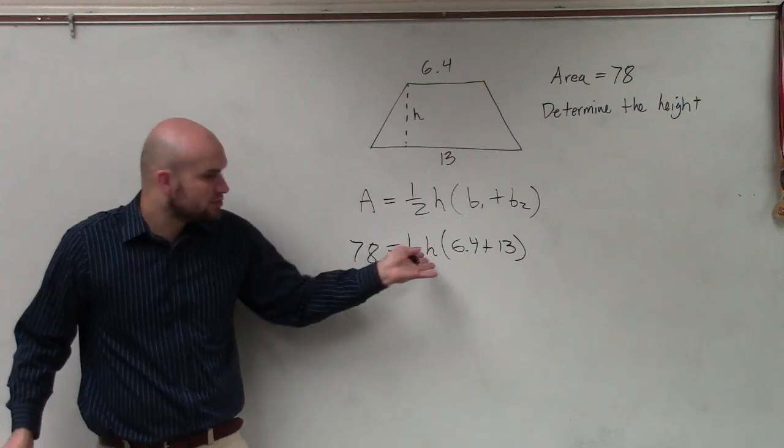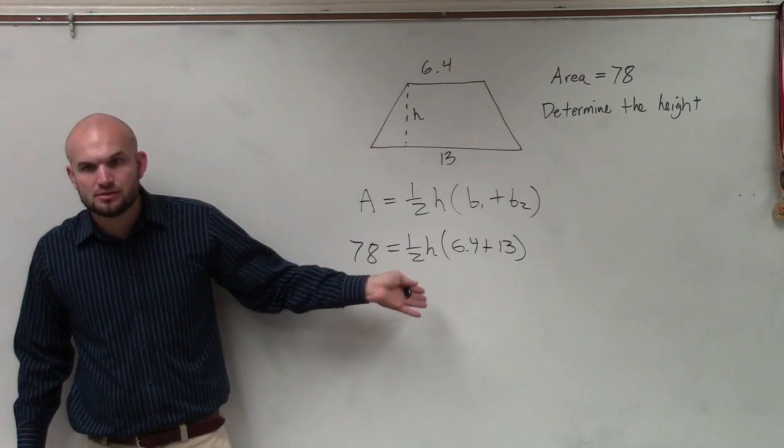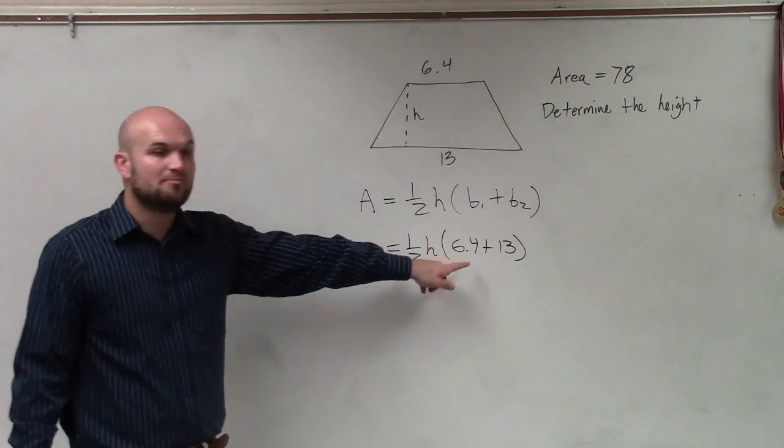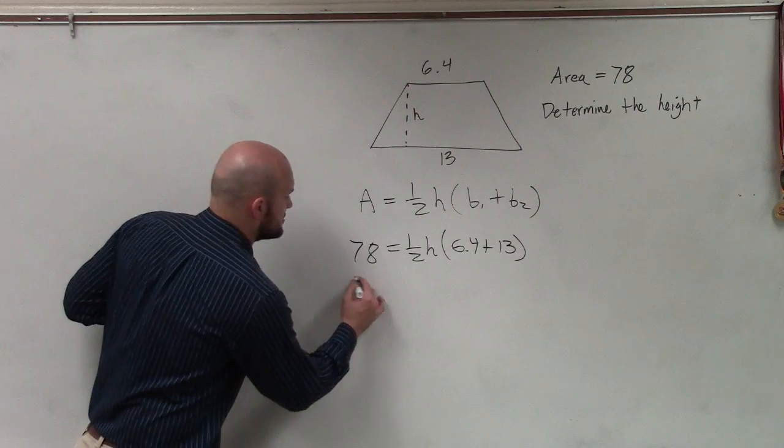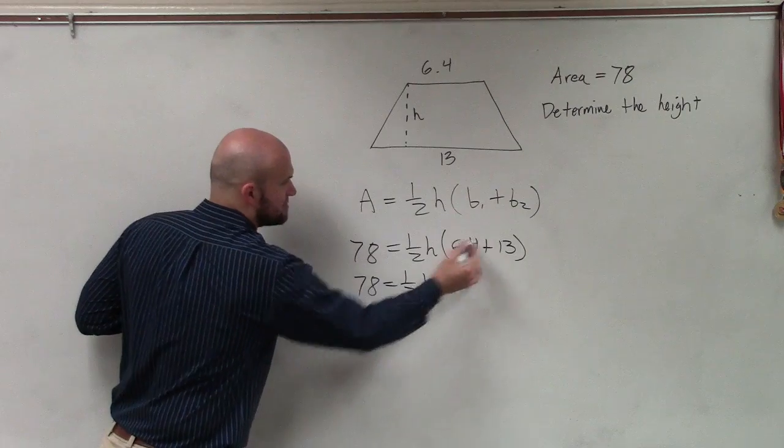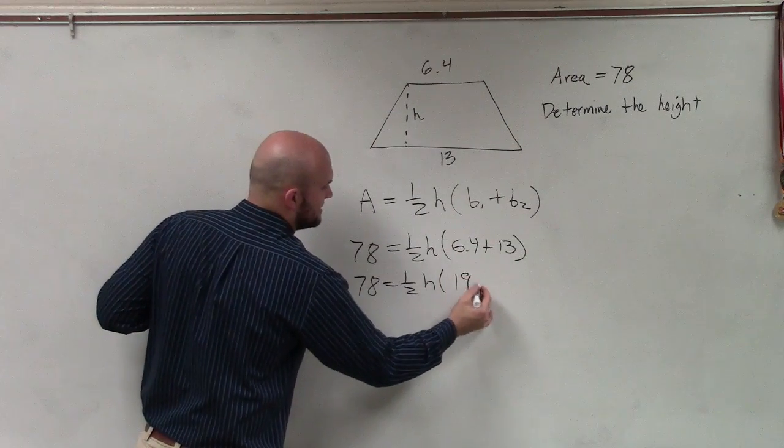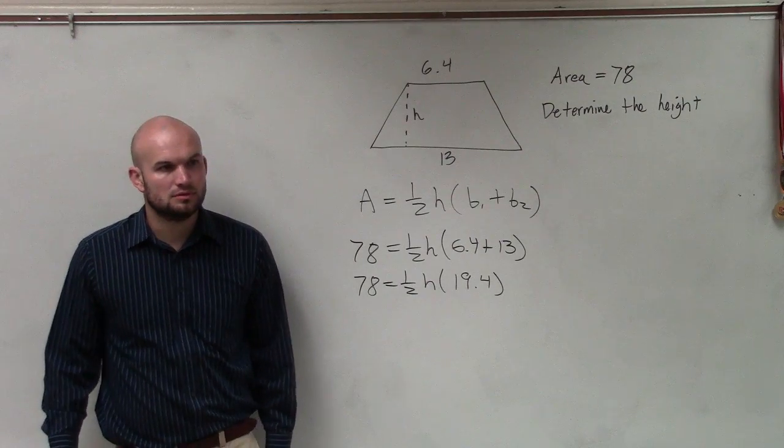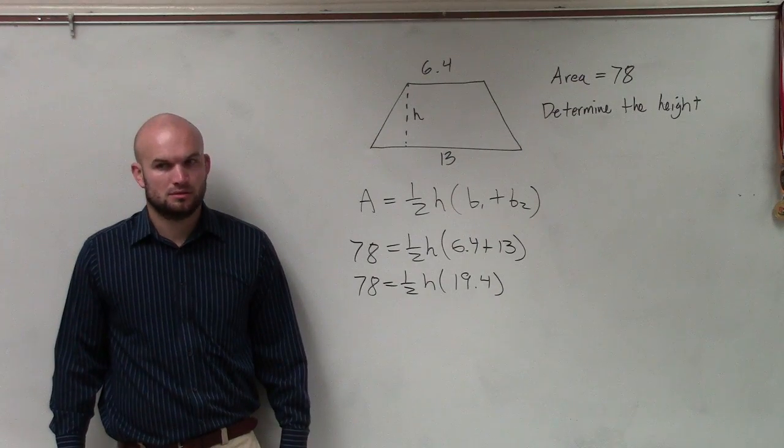What we're trying to do now is solve for h. I recommend combining these in the parentheses. So we have 78 equals one-half h times—6.4 plus 13 is 19.4. Should you guys agree? Yes, I agree with you.